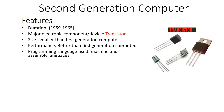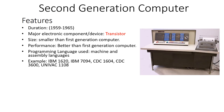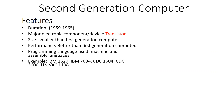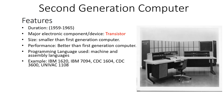Second generation computers used machine level as well as assembly level programming languages. Examples include IBM 1620, IBM 7094, CDC 1604, CDC 3600, and UNIVAC 1108.